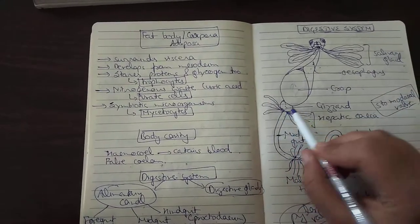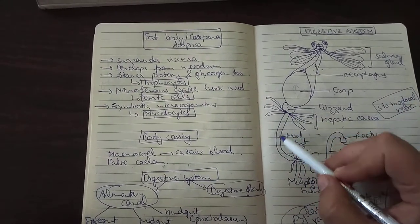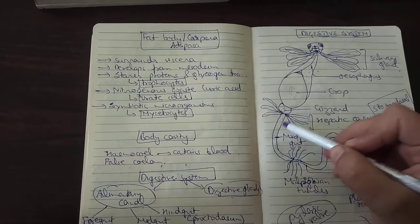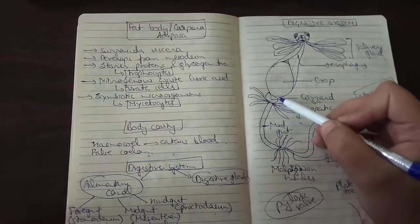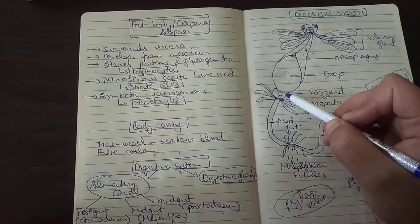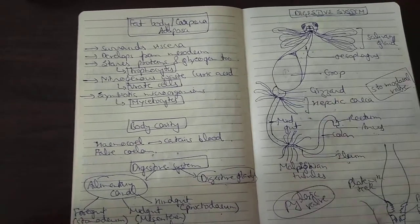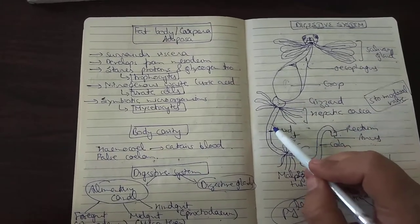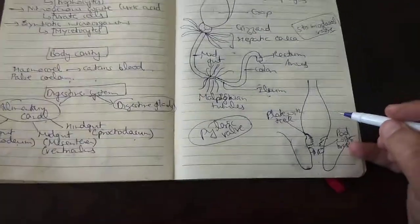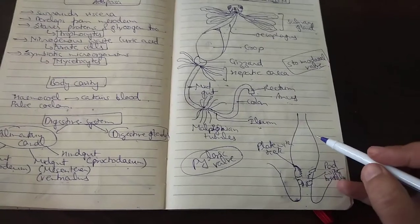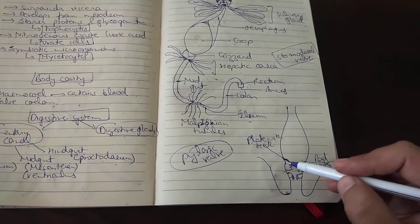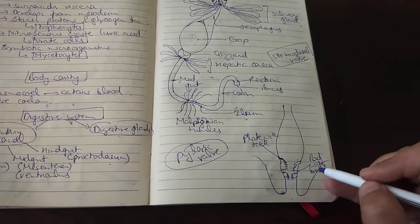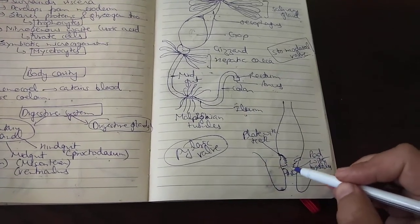This is the gizzard. From here the midgut region releases enzymes — basically the lipase and proteolytic enzymes — they enter into the crop through the gizzard and help in further digestion of the food. Then the food passes through the gizzard into the midgut lining. This gizzard has a cuticular plate with teeth and also has a pad with bristles which act as a sieve.